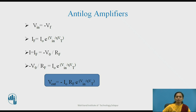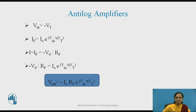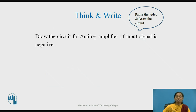If the input signal is negative, we reverse the position of the diode — minus side here and plus side there. We can also replace the diode with a transistor in anti-log circuits. To draw the anti-log amplifier for a negative input signal using a transistor, pause the video and draw the circuit.